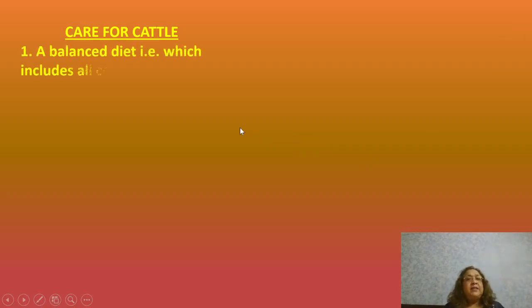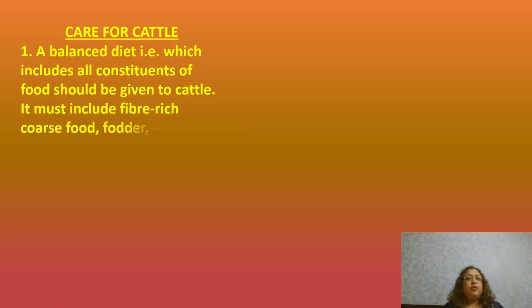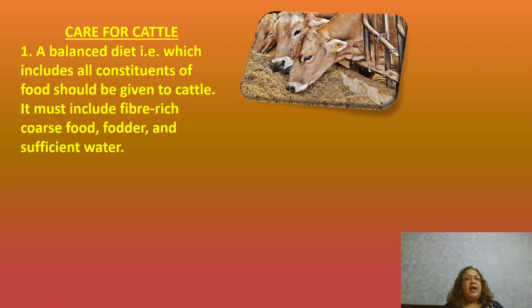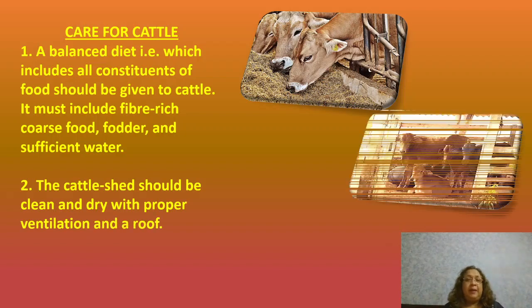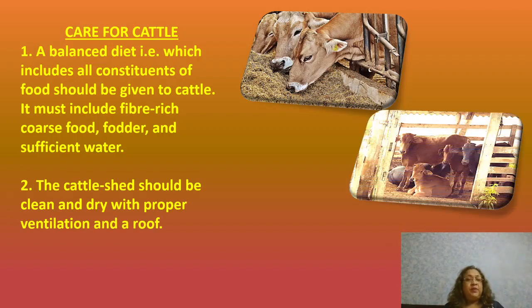Since cattle give us milk and help with heavy farm duties, proper care should be taken. A balanced diet including all constituents of food should be given — it must include fibre-rich, coarse, rough food, fodder, and sufficient water. The cattle shed should be clean, dry, with proper light, ventilation, and a nice roof, and shouldn't be left open to rain.